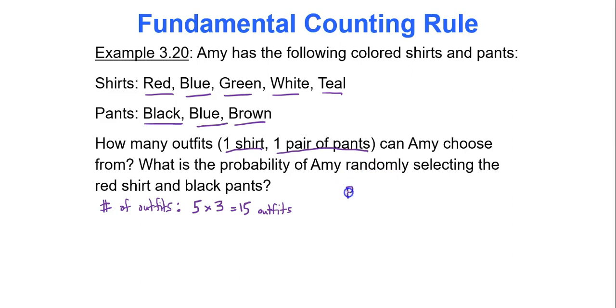So what is the probability of Amy randomly selecting red shirt and black pants? Well, that's one of the outfits, one of her possible outfits out of the 15 outfits. So the probability is one out of 15. So instead of listing all the outcomes in the sample space, we literally learned that there's 15 of them.